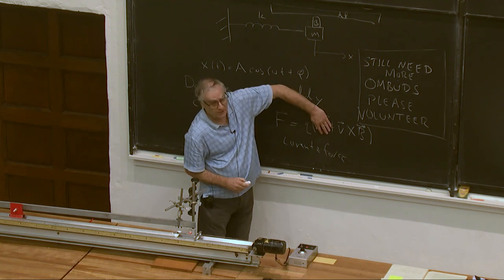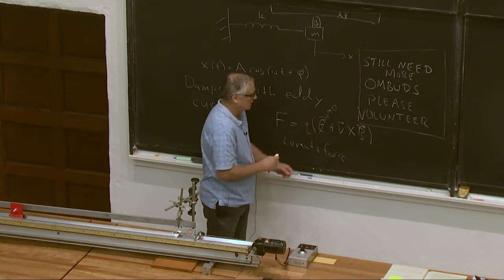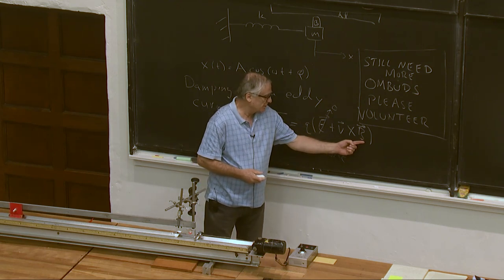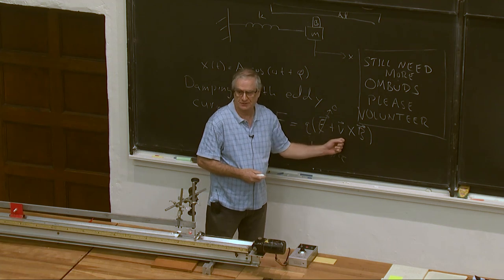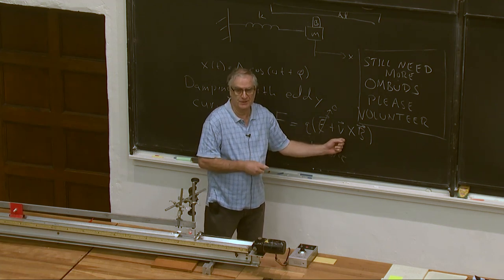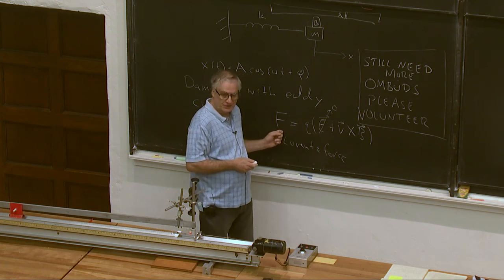This is the Lorentz force law. So, with E equal to zero, we have a magnet. We have relative motion between the charge and the magnet. Which is V, the velocity of this thing. And so, that gives a force on the charges.